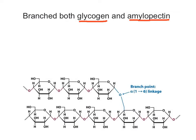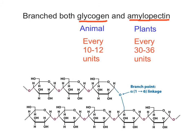We can summarize that glycogen and amylopectin are similar structures. The differences are that glycogen is found in animals and amylopectin is found in plants. Besides, glycogen is more branched than amylopectin — the alpha-1,6 glycosidic bond occurs every 10 to 12 units in glycogen, whereas in amylopectin it occurs every 30 to 36 units.